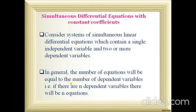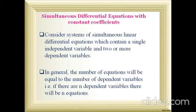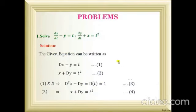The number of dependent variables is equal to the number of equations. If we have two equations in the given problem, we will definitely have two dependent variables, and for all problems we have only one independent variable. So dependent variables equals the number of equations, and the independent variable count is 1. Now we go to the first problem under this category.